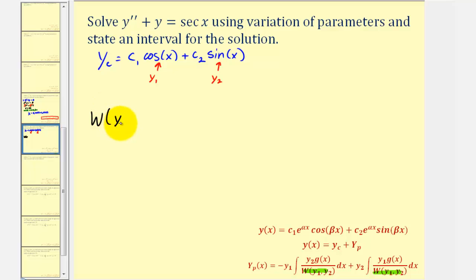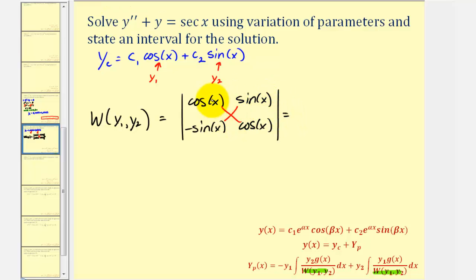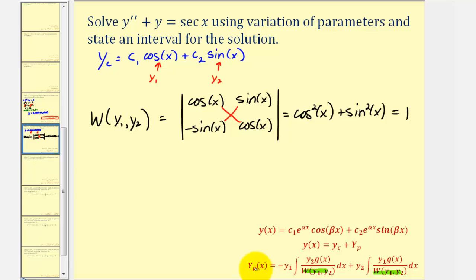The Wronskian of y sub one and y sub two is a two by two determinant where the first row is y sub one and y sub two — cosine x and sine x — and the second row is their first derivatives: negative sine x and cosine x. The determinant equals cosine squared x, minus negative sine squared x, which becomes plus sine squared x, and that equals positive one.